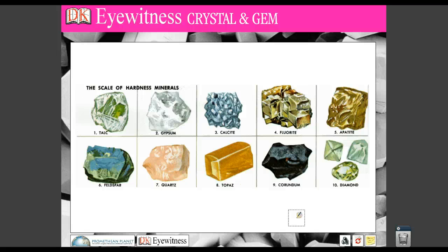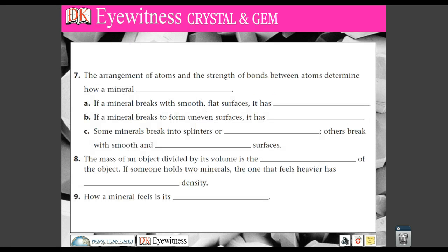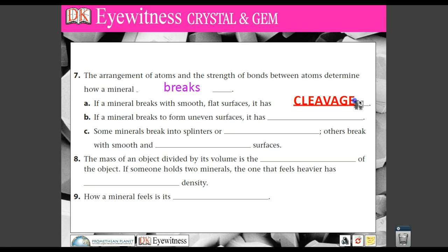So we've talked about luster, which is reflectivity; streak, what a mineral looks like in powder form; and its hardness. Let's look at some other things. The arrangement of atoms and the strength of the bonds between atoms determine how a mineral breaks. If a mineral breaks with a smooth, flat surface, that's because the bonds between ions and atoms are really strong, and we have what's called cleavage.